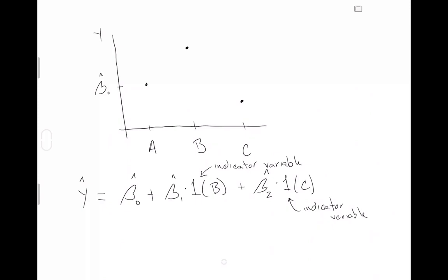Anytime we're making a prediction for level C, the indicator variable for C will be one and the indicator for B will be zero. Alternatively, if we are making a prediction for level B, the B indicator becomes one and the C indicator becomes zero. This is how the indicators indicate whichever level we're trying to make a prediction for.